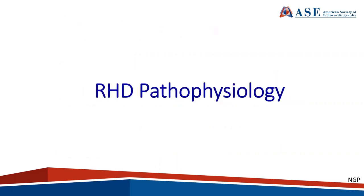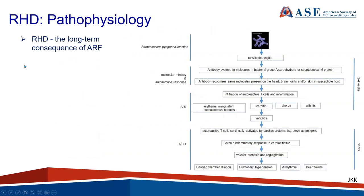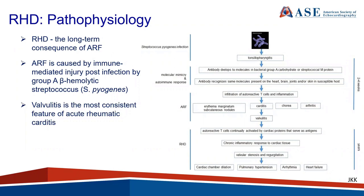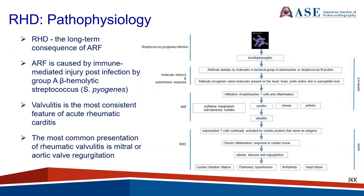Dr. Kim will talk about the pathophysiology. Rheumatic heart disease is a long-term consequence of acute rheumatic fever, which is caused by immune or autoimmune-mediated injury following an infection by Group A beta-hemolytic Streptococcus, otherwise known as Strep pyogenes. Acute rheumatic fever can present with a variety of symptoms including skin findings, chorea, and arthritis, but carditis is the most common feature, and valvulitis is the most consistent feature of acute rheumatic carditis. The most common presentation of acute valvulitis is mitral or aortic valve regurgitation.